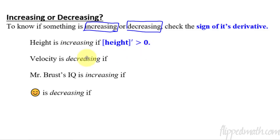Is velocity decreasing? That happens if velocity's derivative is less than zero, or in other words, acceleration is less than zero. What about Mr. Brust's IQ? Mr. Brust's IQ is increasing only in his dreams, so if he's dreaming or if the derivative of Brust's IQ is positive.